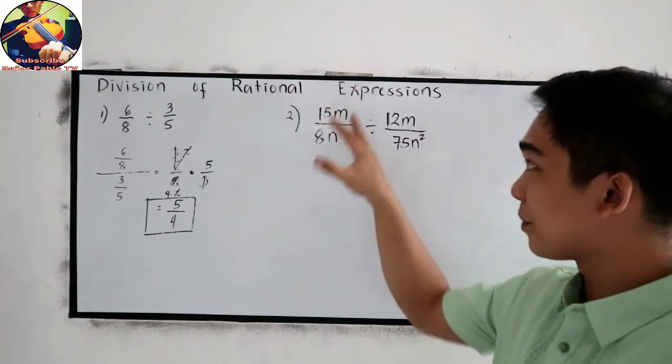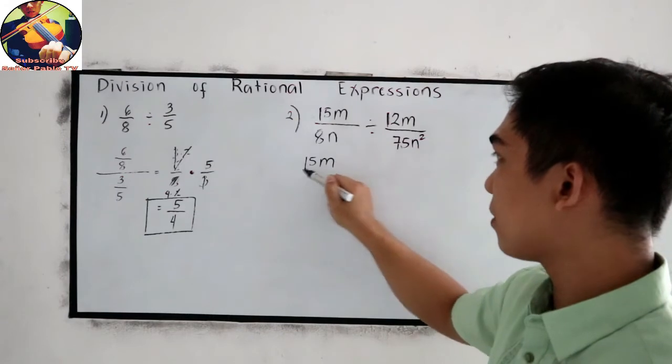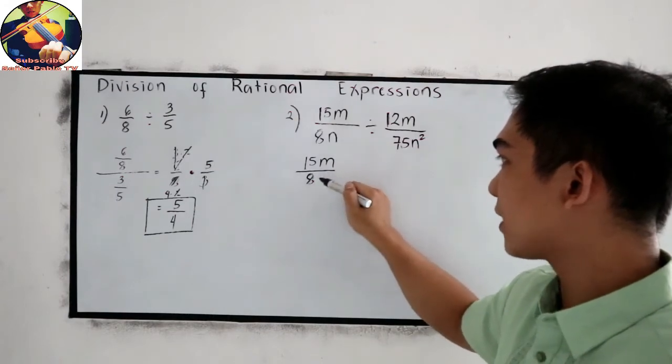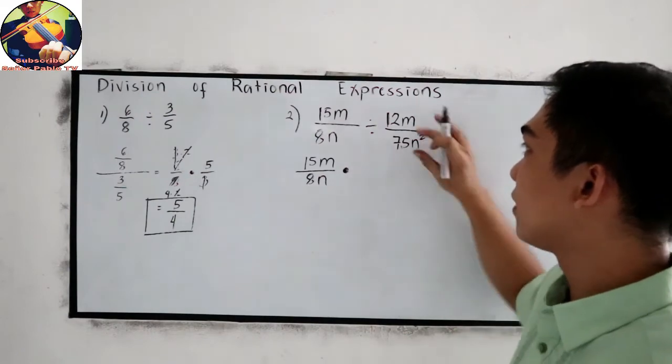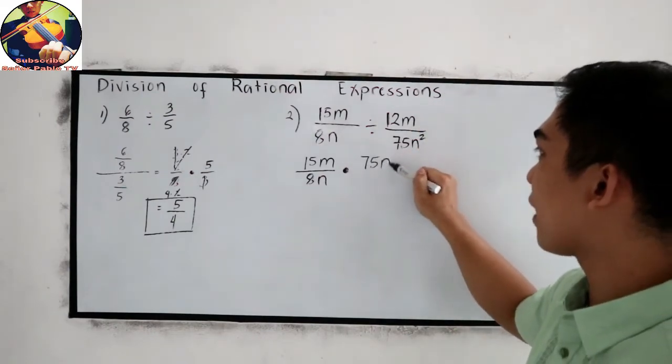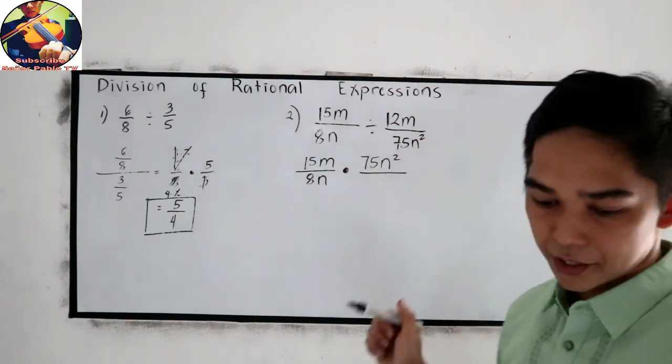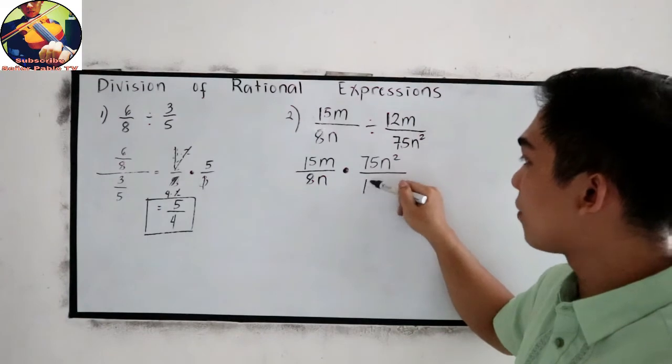Copy our numerator: 15m over 8n. Then proceed to multiplication. Get the reciprocal. That will become 75n squared all over 12m.